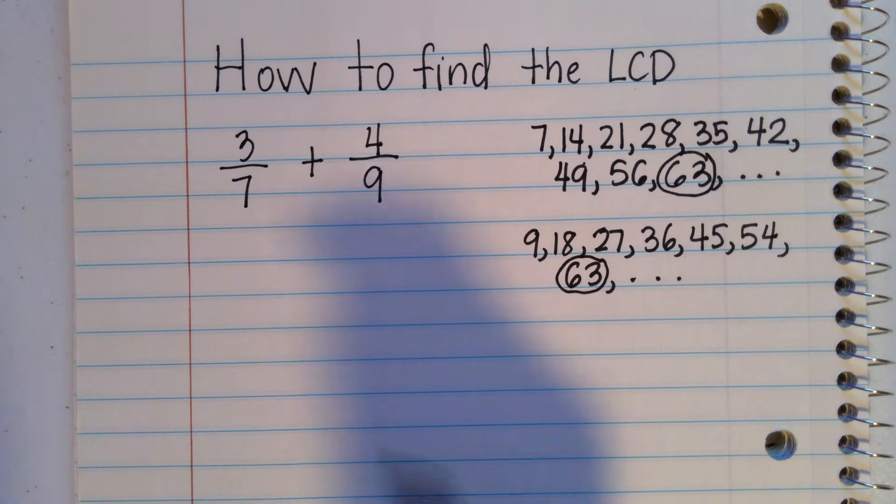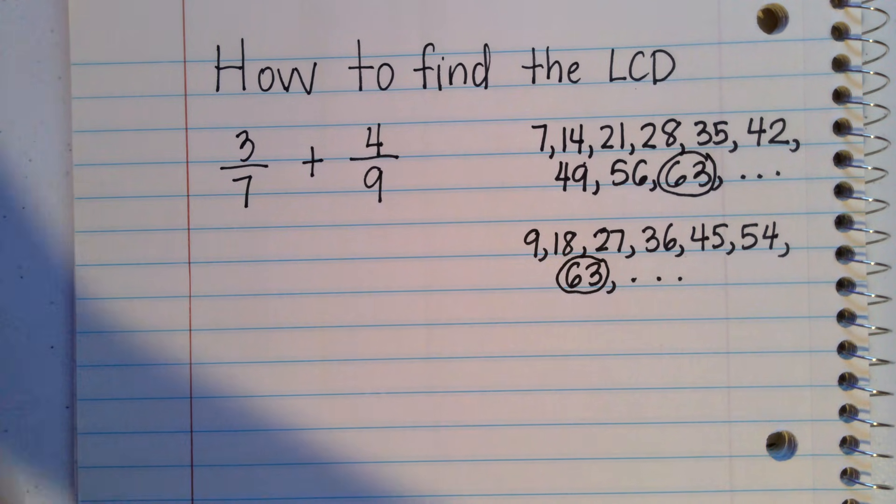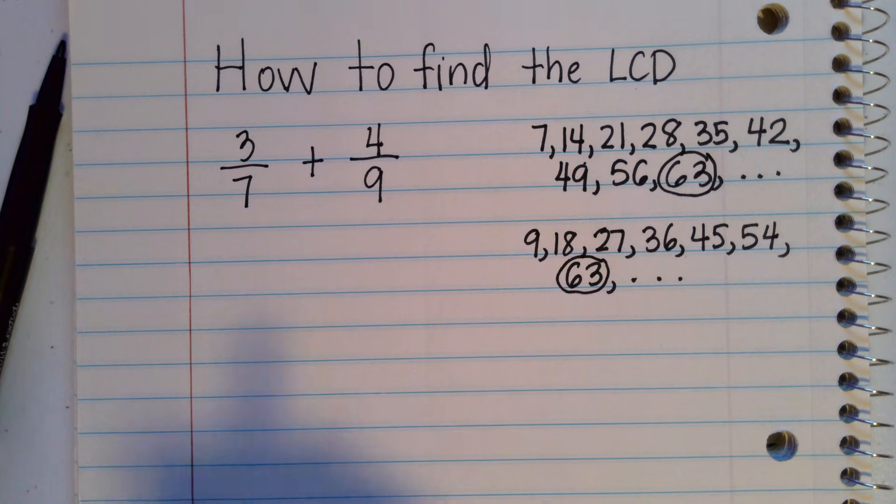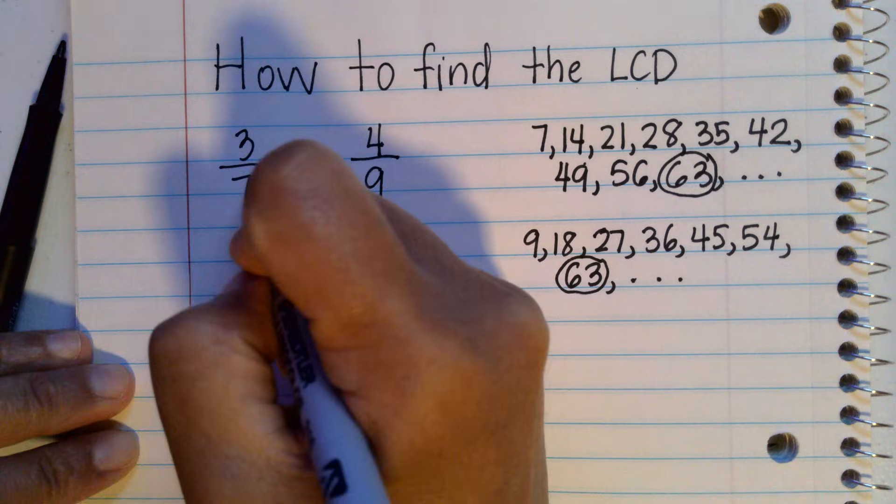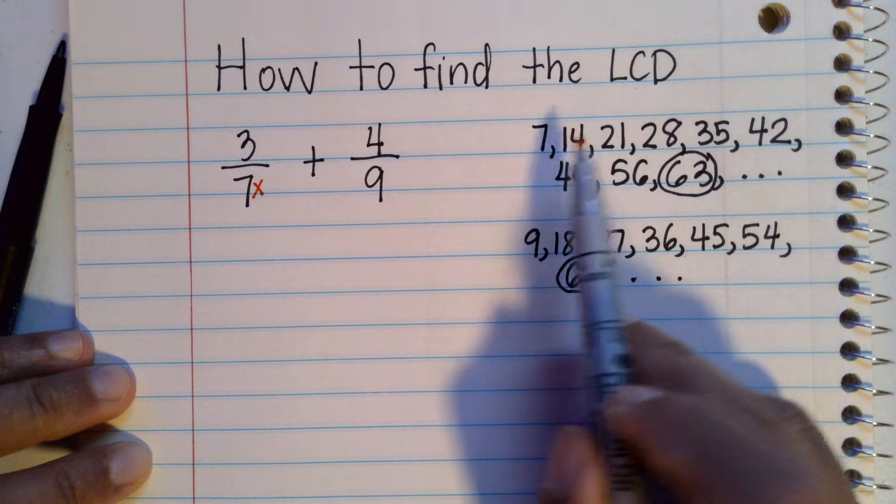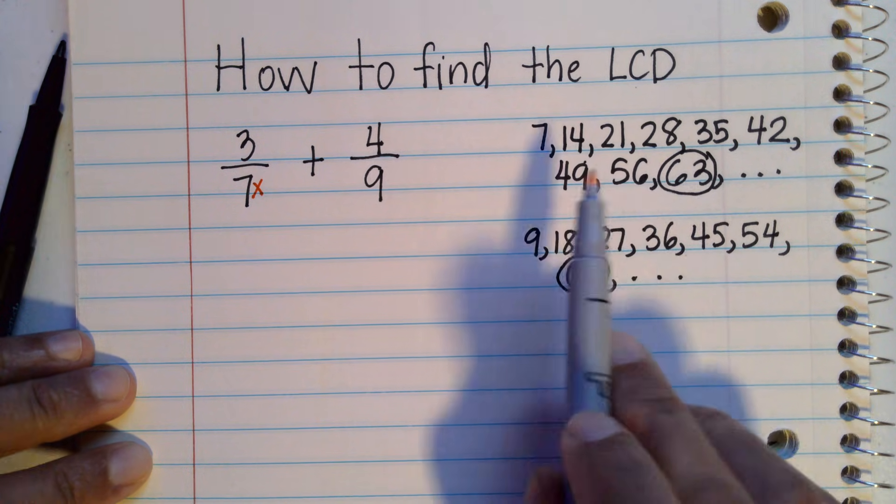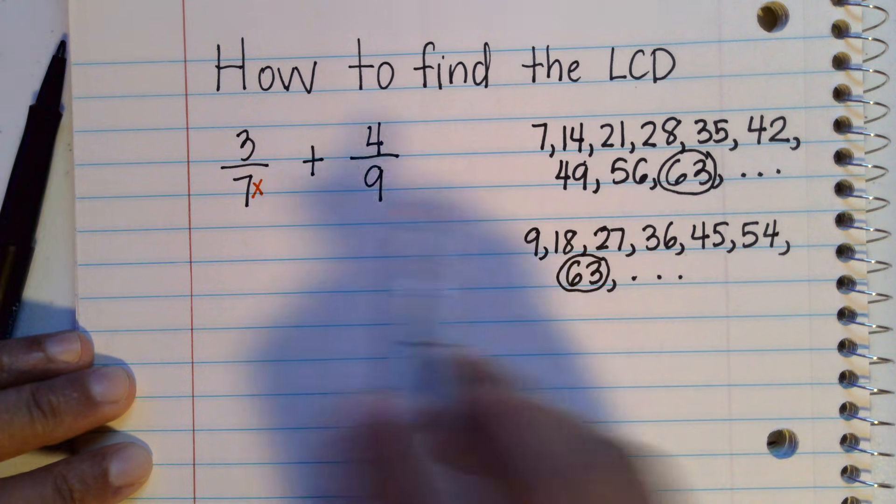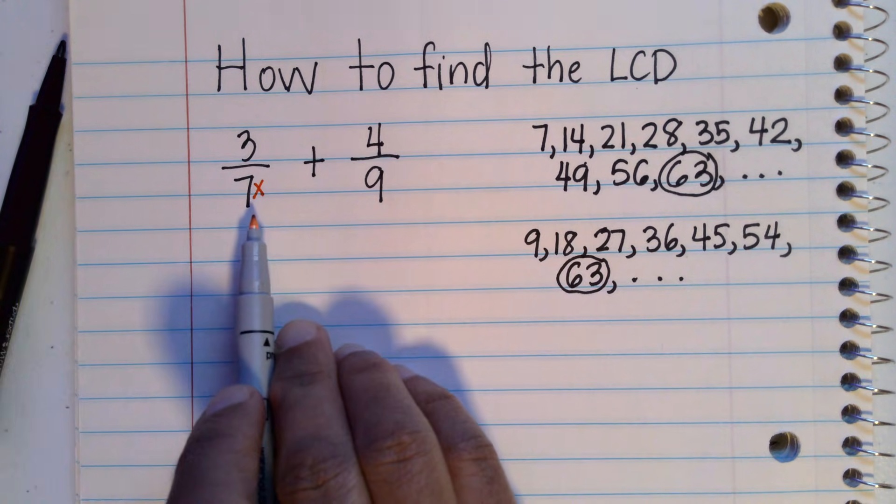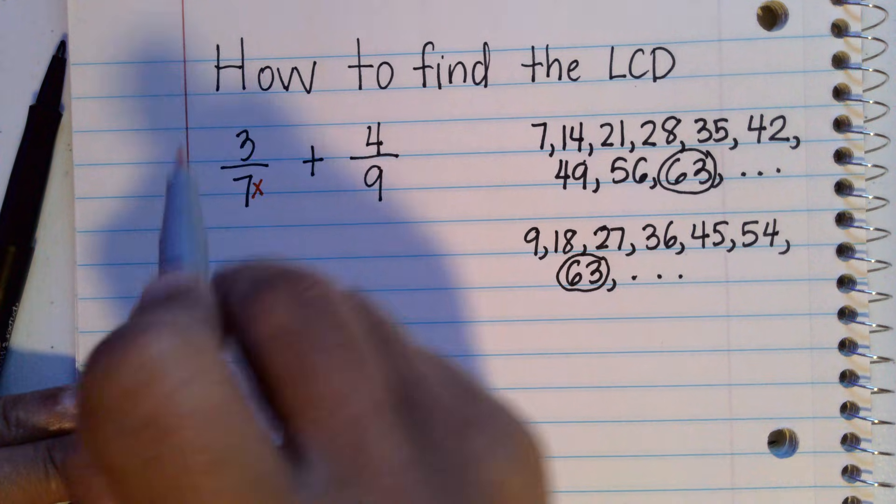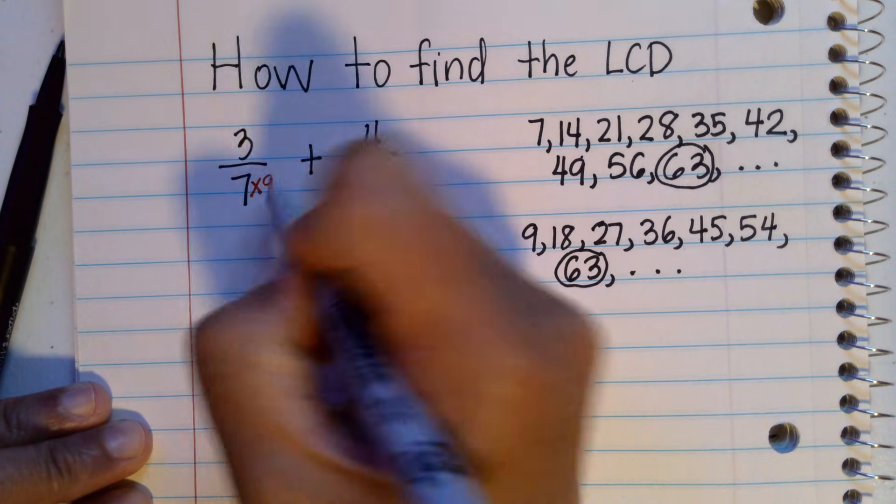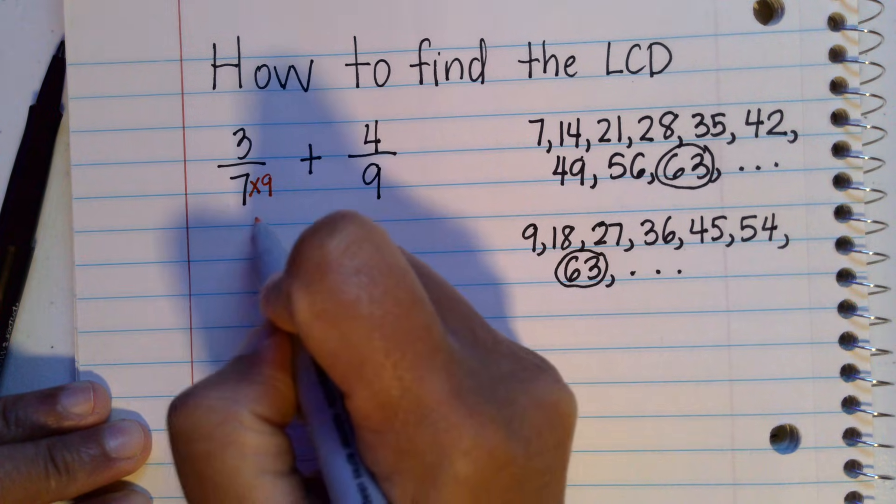And then from here, you have to multiply the two denominators by a certain number so that they become 63. So for seven, you notice that you have to count one, two, three, four, five, six, seven, eight, nine. You have to count by seven nine times so that you get a product of 63. So that means you have to multiply seven by nine to make it into 63.